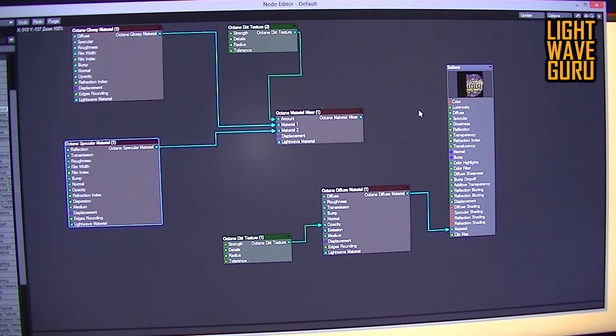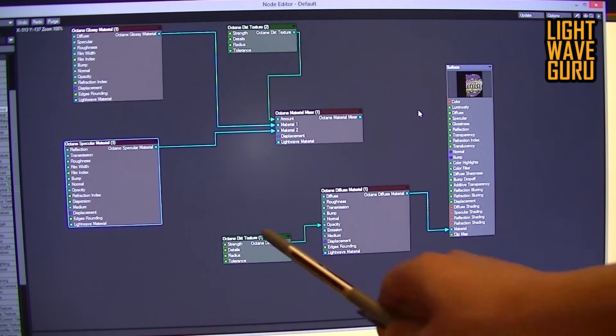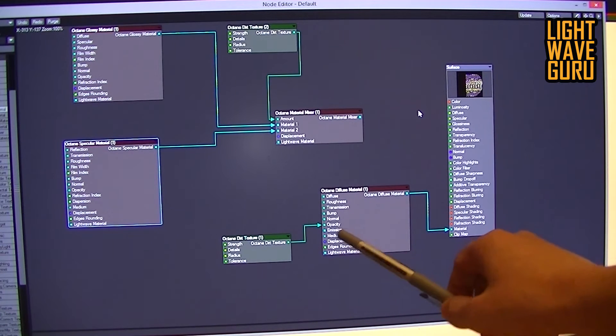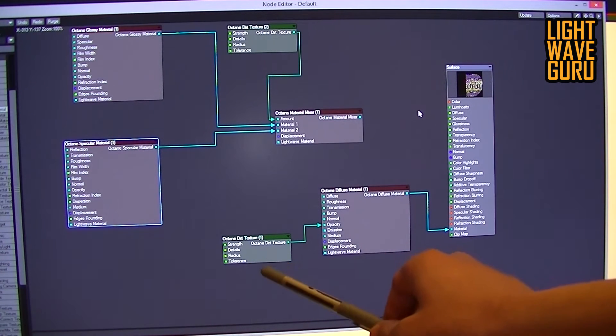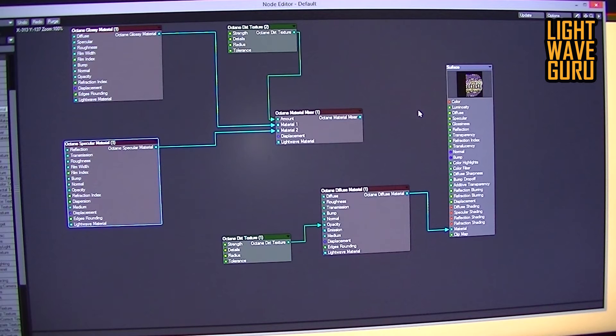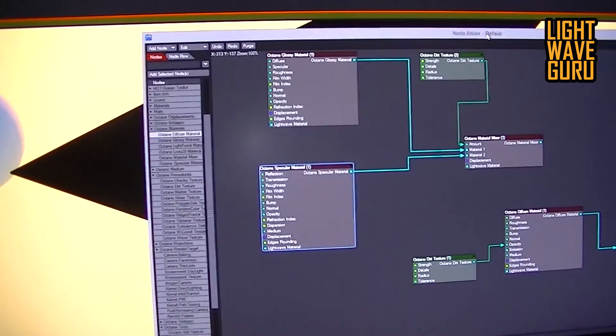You see here your node setup and you put in the opacity channel your Octane Dirt node, and then you say you see not a transparency channel. They have a simple reason, and the reason is that the Dirt node is a contact node.